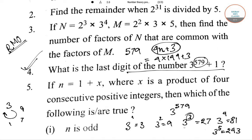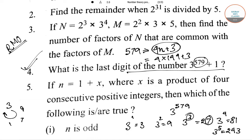As 3 to the power 3 gives us the last digit 7, similarly the number 579, which can also be expressed as 4n plus 3, will also give us the last digit 7. So 7 plus 1 equals 8. The last digit of the number 3 to the power 579 plus 1 is 8.